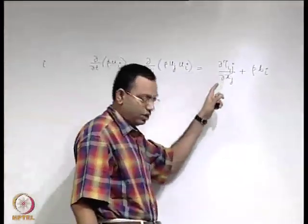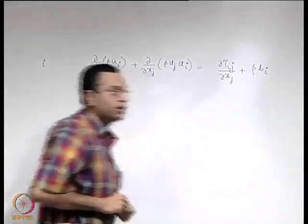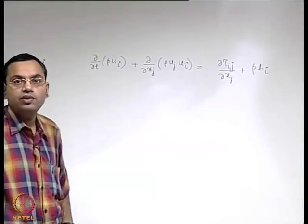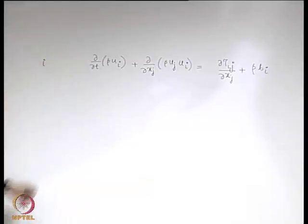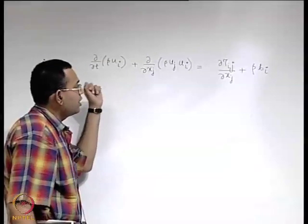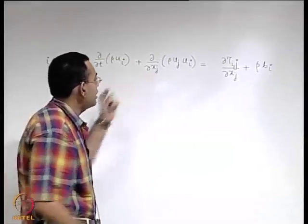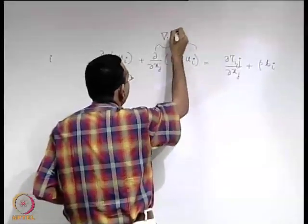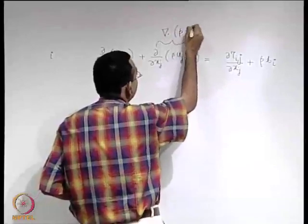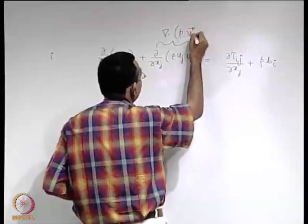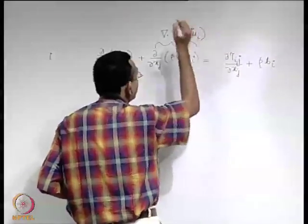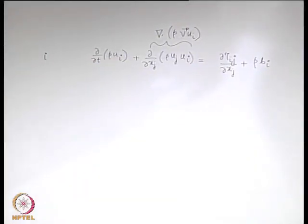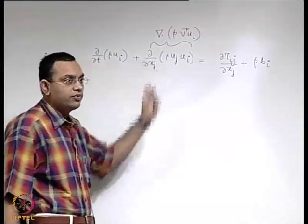We have the corresponding vector forms and we also discussed what the vector form looks like. With the vector form, you can clearly see that you may write this as the divergence of rho V into the velocity component that you are talking about. So you may use interchangeable forms.